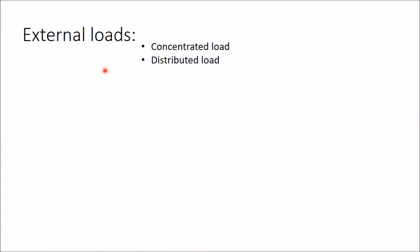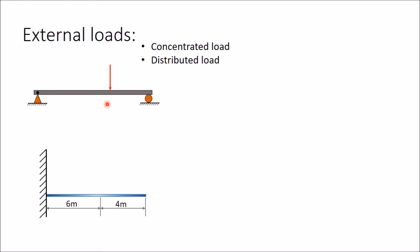Different types of external loads applied to a beam are concentrated load and distributed load. A concentrated load is applied at a very small area, so this type of load is called a concentrated load or point load. For distributed load, here a load is distributed throughout the length of a cantilever beam, uniformly distributed from one point to another at an intensity of 2 kN per meter throughout.